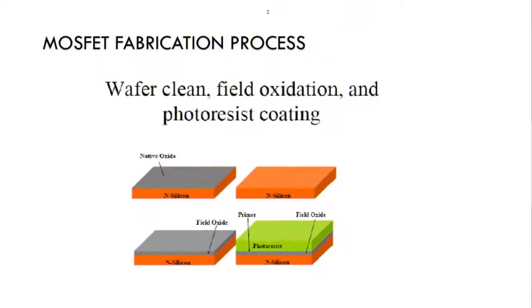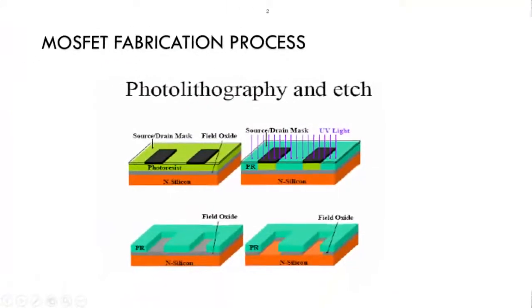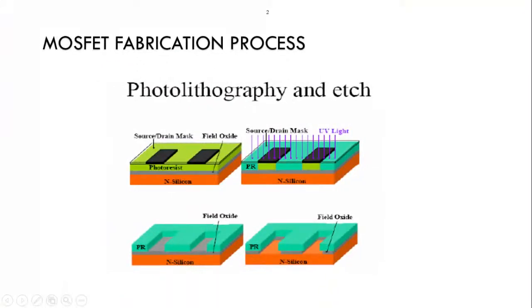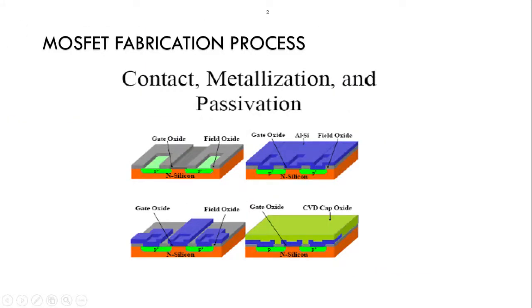For MOSFET fabrication, we have a lot of flow processes: cleaning process, field oxidation, photoresist coating, photolithography, and etching. Then we have a contact process, metallization, and also a passivation process.